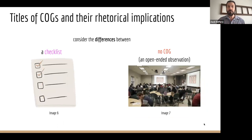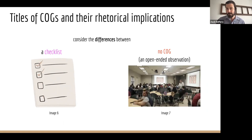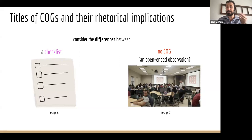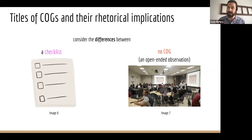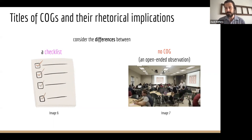First, I want to take a moment to talk about the titles of COGS because they offer clues as to this genre's immediate social uptake. Consider a checklist — it offers a series of quickly observable, doable phenomena, not so dissimilar from a to-do list, which has a pretty clear mission: check the boxes. Alternatively, another possibility is a purely open-ended classroom observation that isn't based on a COG at all. An observer shows up to your classroom, you hand over any relevant materials, and the rest is in their hands.